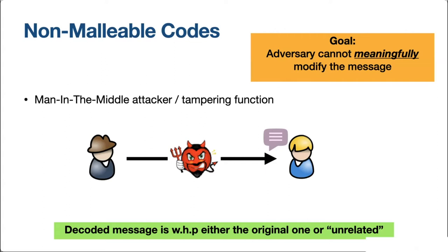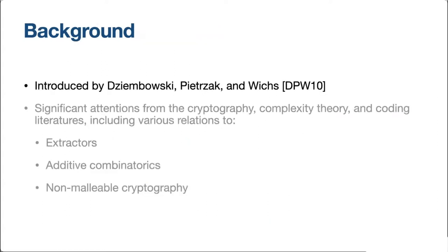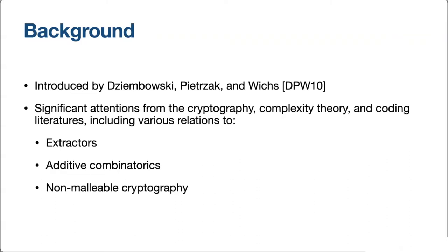Or we want to make sure that the adversary, no matter what it did in trying to modify the underlying message, didn't succeed. This primitive is called a non-malleable code. It was introduced about 10 or so years ago by Dziembowski, Pietrzak, and Wichs.